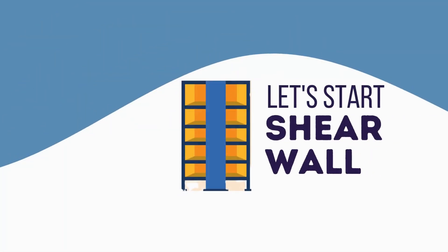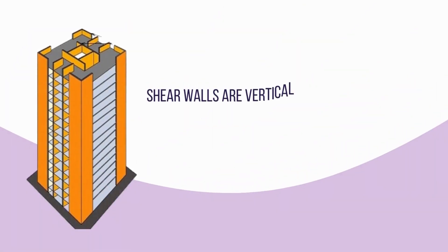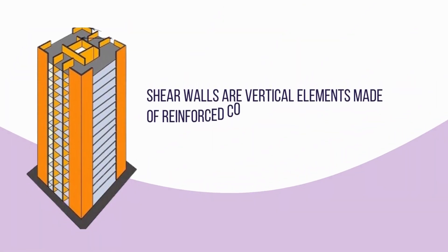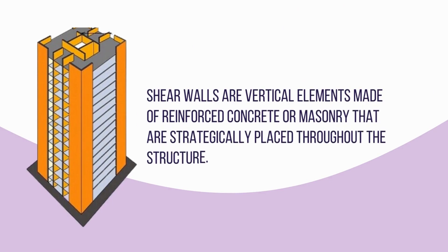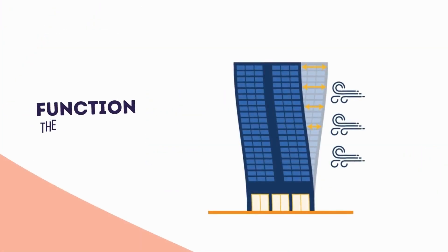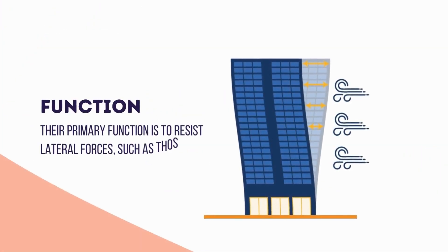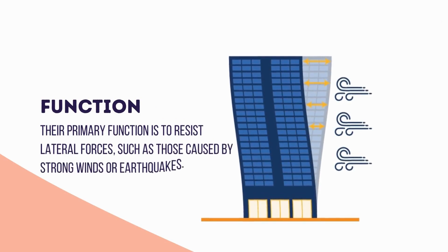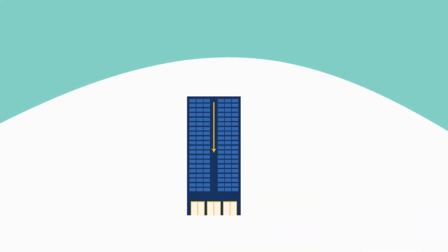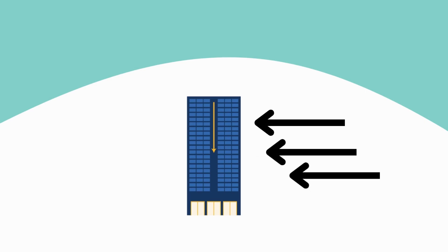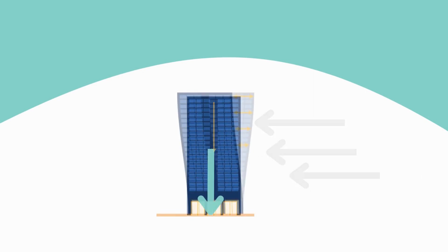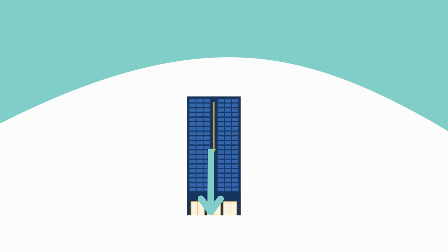Let's begin with shear walls. Think of them as the silent superheroes of building design. Shear walls are vertical elements made of reinforced concrete or masonry that are strategically placed throughout the structure. Their primary function is to resist lateral forces, such as those caused by strong winds or earthquakes. When these lateral forces exert pressure on a building, shear walls transfer that energy down to the foundation, effectively preventing the building from swaying or collapsing. They act as giant vertical beams, capable of absorbing and redistributing these forces.